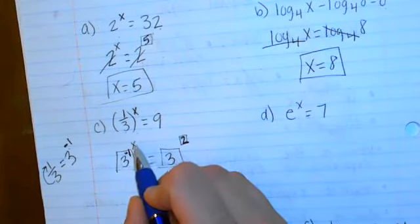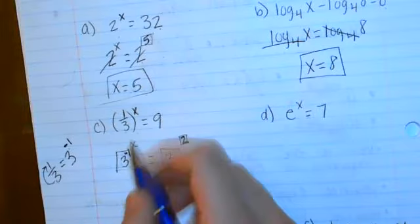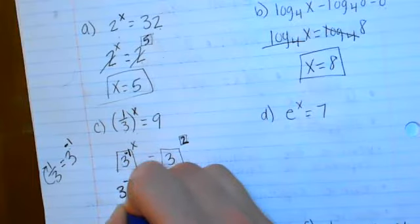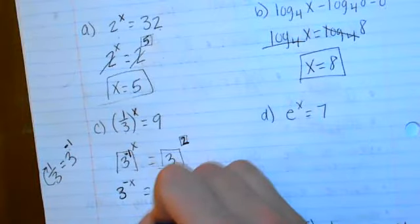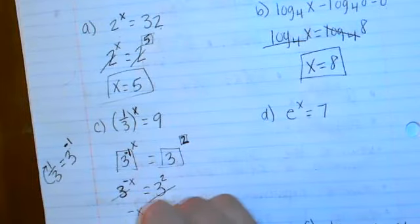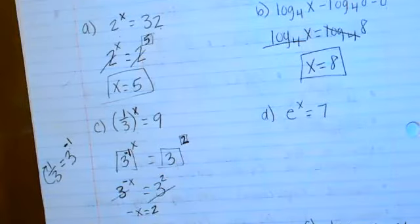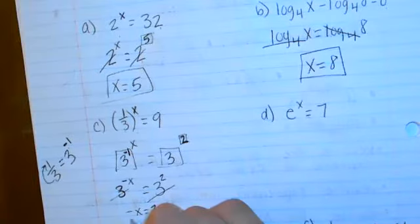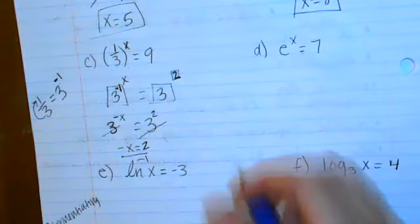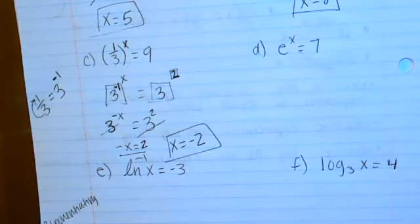With 3 to the negative first raised to the x, I multiply those exponents: negative 1 times x gives negative x. This equals 3 squared. My 3s cancel, leaving negative x equals 2, so I divide by negative one to get x equals negative 2.